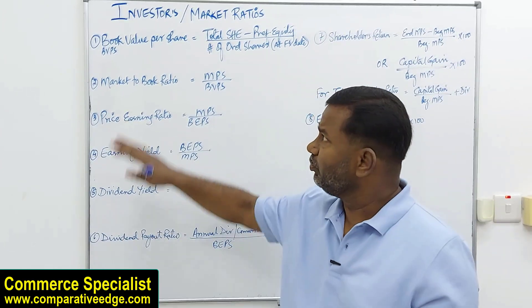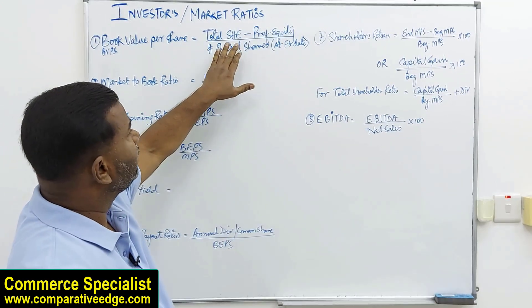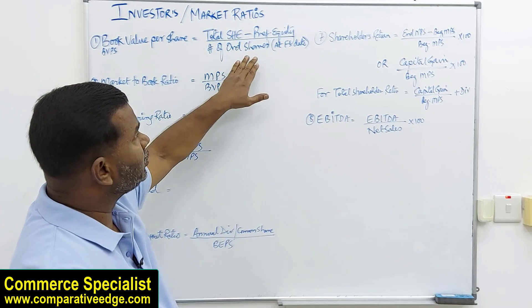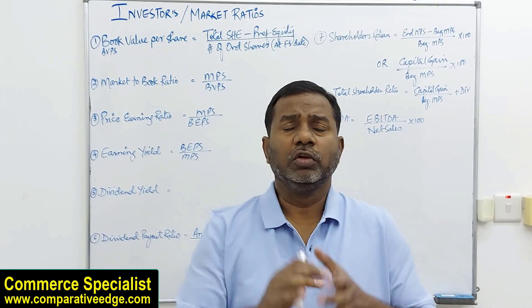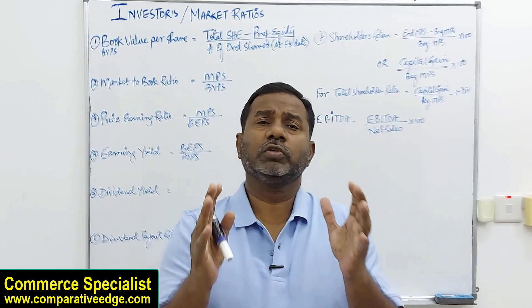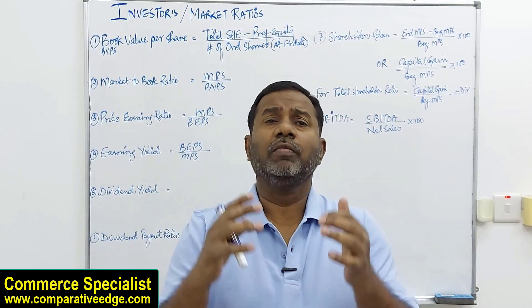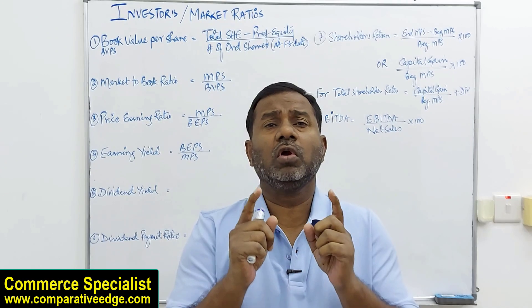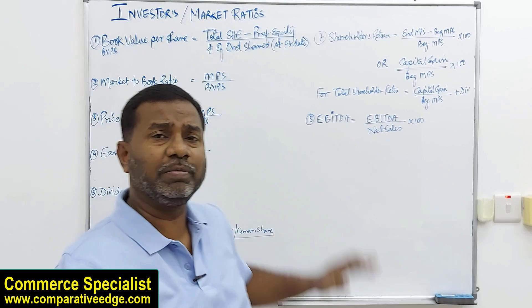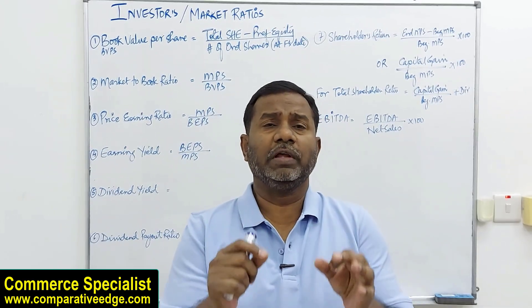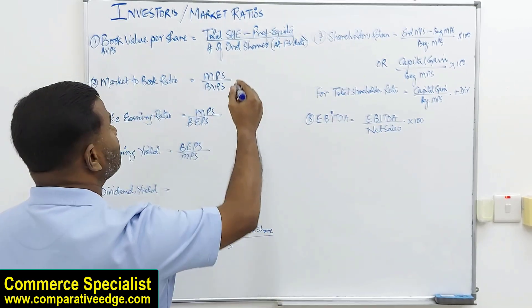The very first ratio to discuss is book value per share. The formula is: total shareholders' equity minus preferred equity, divided by the number of ordinary shares at the financial statement date. In the numerator, take total shareholders' equity and subtract preferred equity. In the denominator, use the number of shares at the reporting date — not the weighted average number of shares.